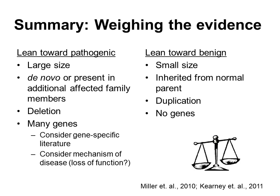This slide is derived from a table in the Miller et al. paper, which is very useful in summarizing the various types of information that should be considered in the evaluation of CNVs and how each piece of data should tip the interpretive scales toward either a pathogenic or a benign designation. The factors that should make one lean toward a pathogenic interpretation include large size, a de novo event, or the presence of the CNV in other affected relatives, a deletion, and gene content — including the overall gene number and any gene-specific literature. Factors that should make one lean toward a benign interpretation include small size, inheritance of the CNV from an unaffected parent, a duplication, and a small amount of genes, particularly if there is little to no information in the literature about dosage effects of those genes.